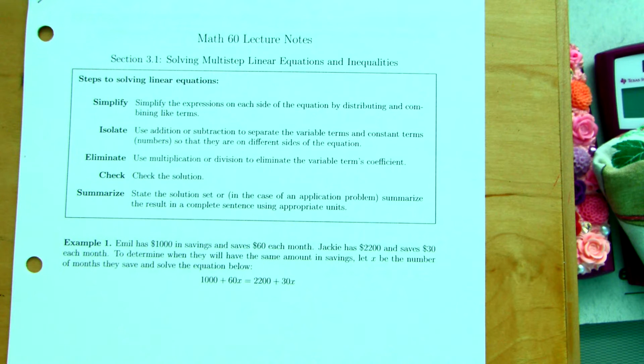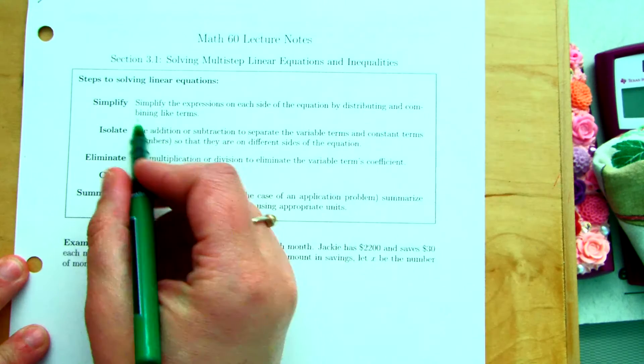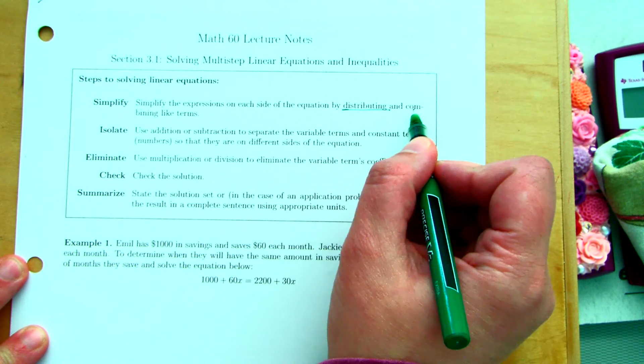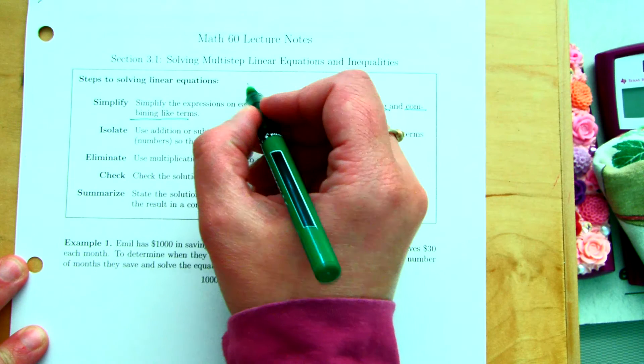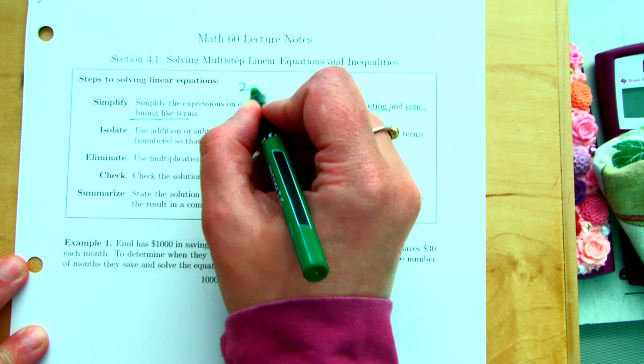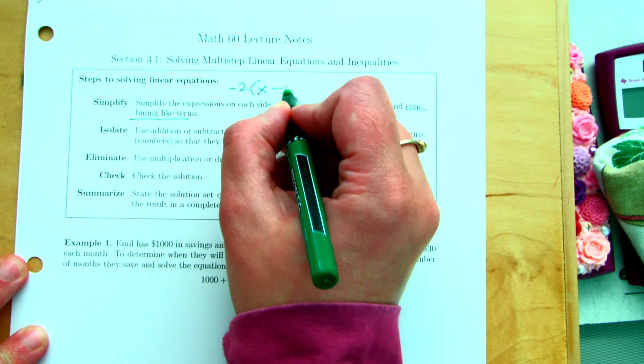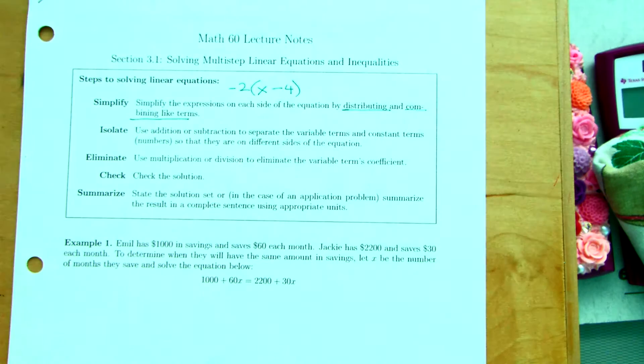Distributive property. So, simplify the expression on each side by distributing and combining like terms. You might remember that distributing looks like this. I'm going to do a negative: -2 times (x - 4). The negatives throw us off the most, okay?